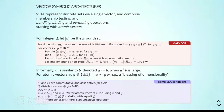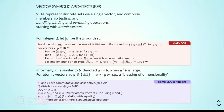For different VSAs there are different atomic vectors, different versions of bundling, binding, and permutation. These operations have simple properties. One thing needed is a notion of similarity for two vectors — in our case, whether their dot product is large enough. As you know, two sign vectors in sufficiently large dimension will be approximately orthogonal to each other with high probability — they'll be dissimilar.